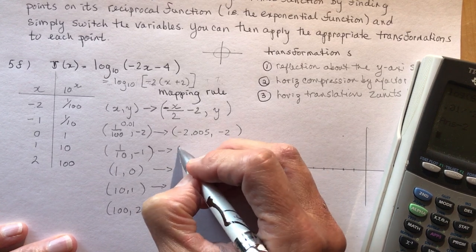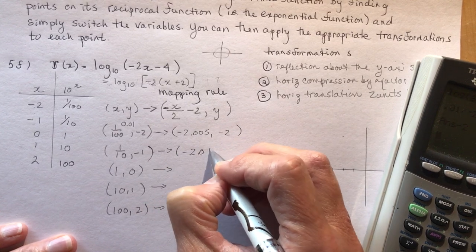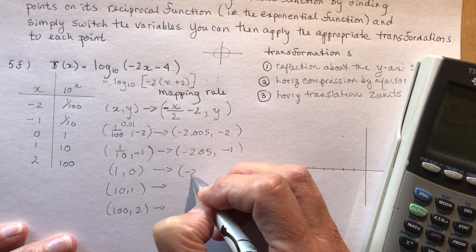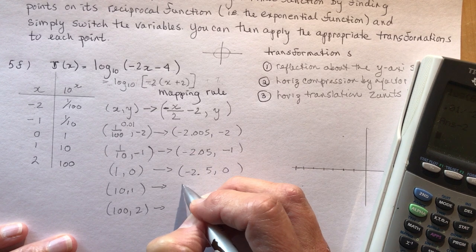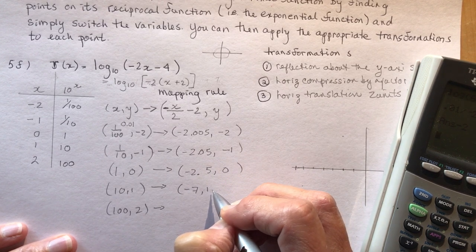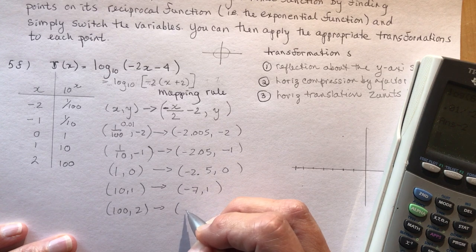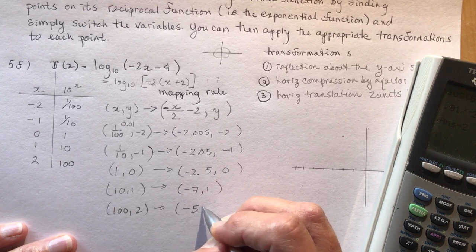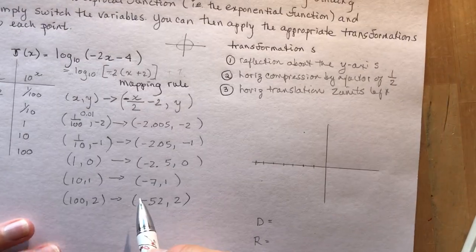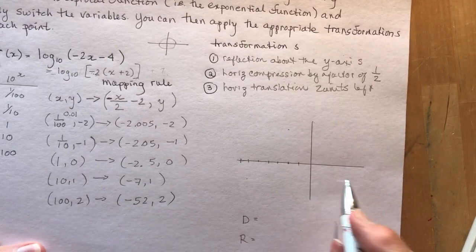So just to save some time here, I'm just going to tell you what the points are. You could draw them on your own. Minus 2.05 and minus 2, minus 2.05 and minus 1. I'm doing this all in my head as I do it. I cheated. I did it before. Minus 7 and 1. Minus 52 and 2. So now I have all the points that I want to put on my graph over here.